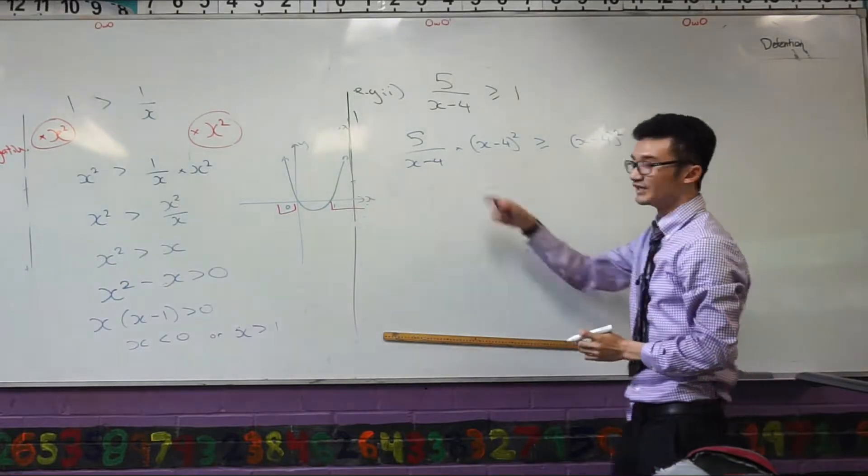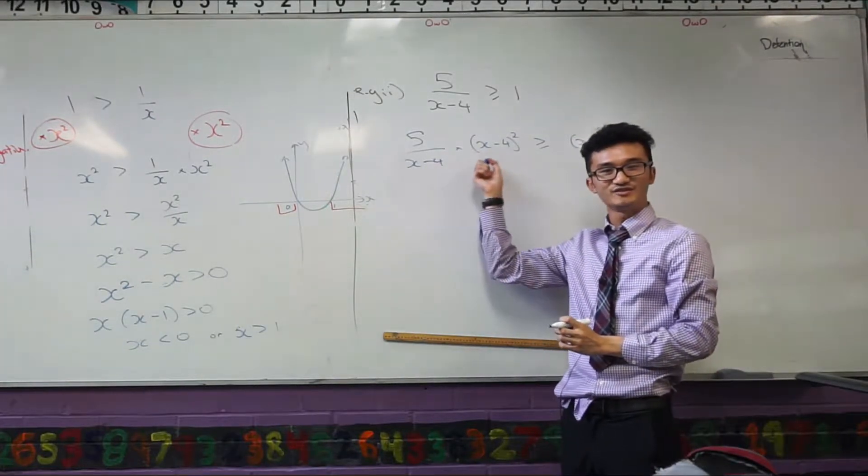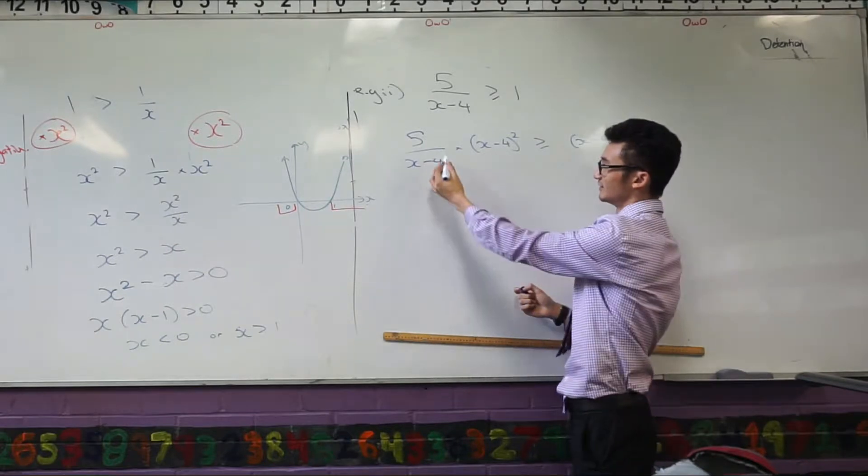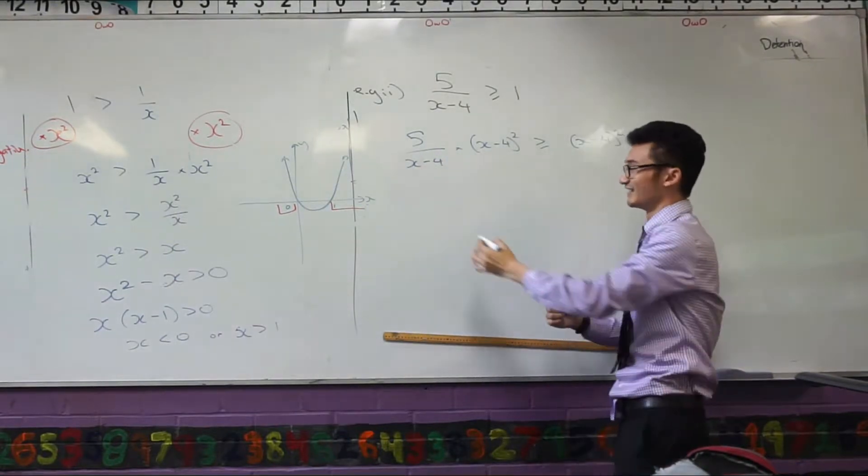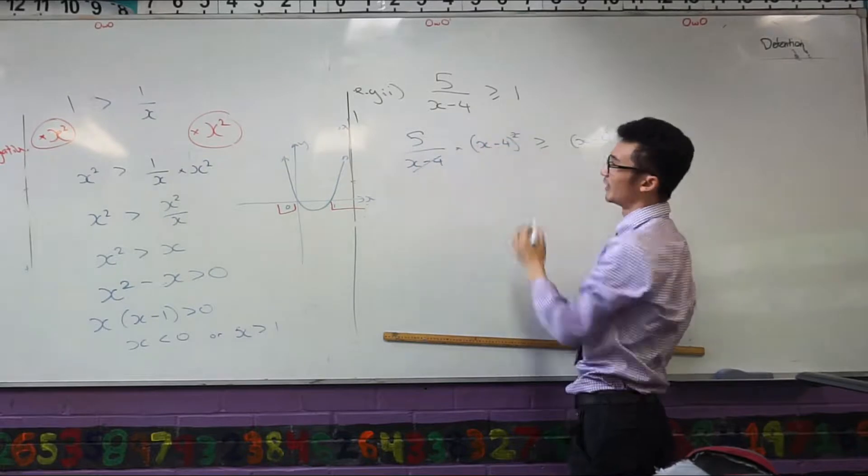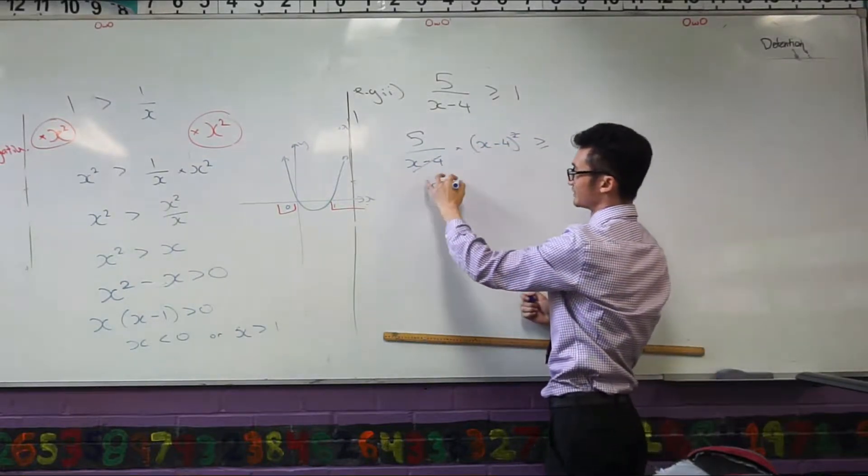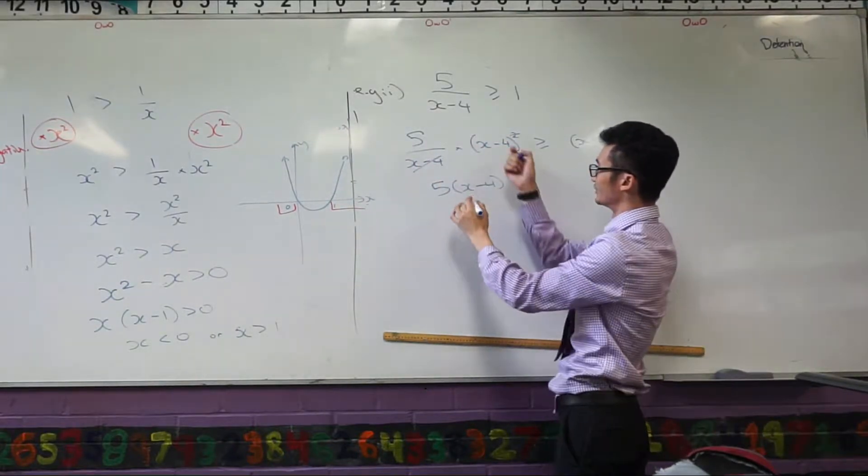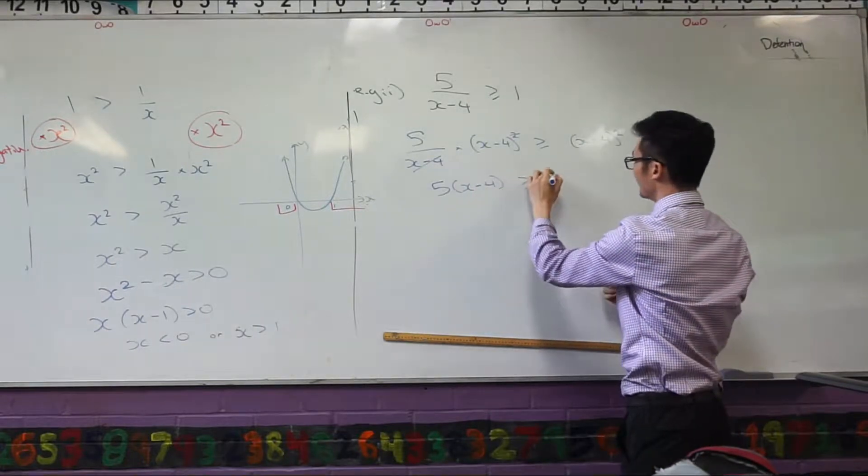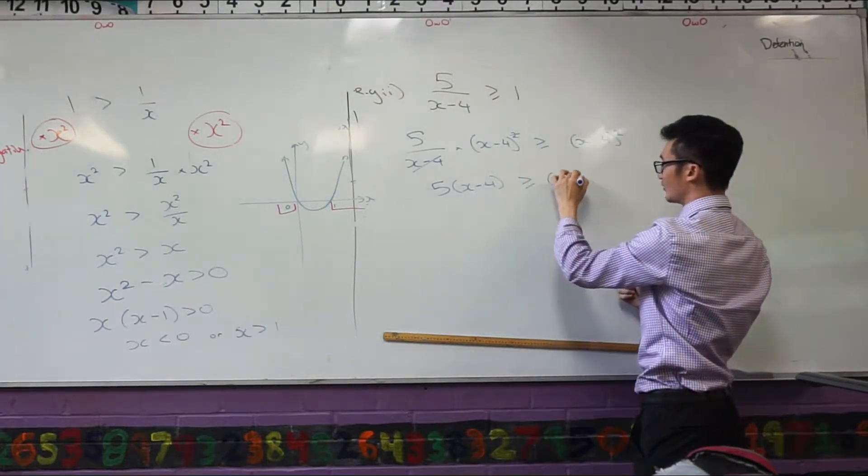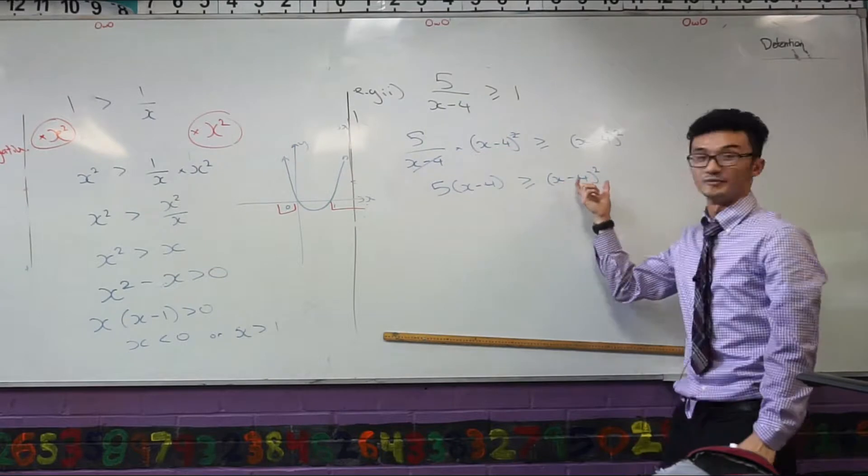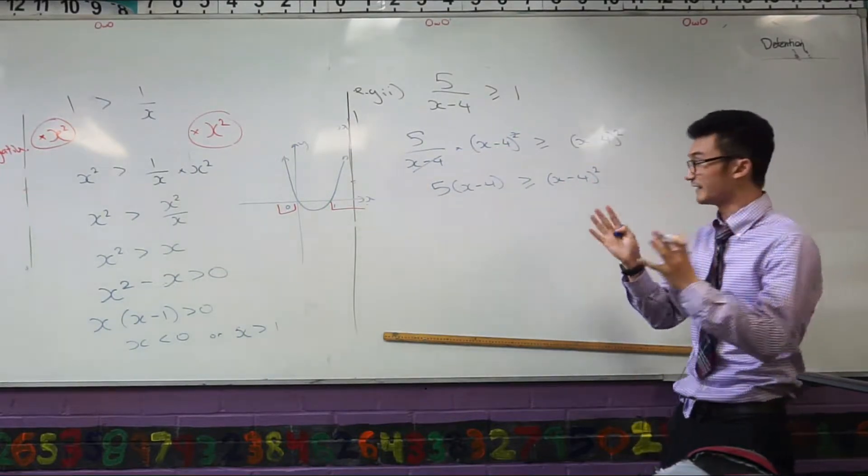This one actually simplifies quite nicely. What does it simplify to? Yeah, so I can divide this through that power by 1 and that would be 5 outside of x minus 4. Because one of those will simplify through. Now this I know is a quadratic equation because there's going to be some x squareds here.